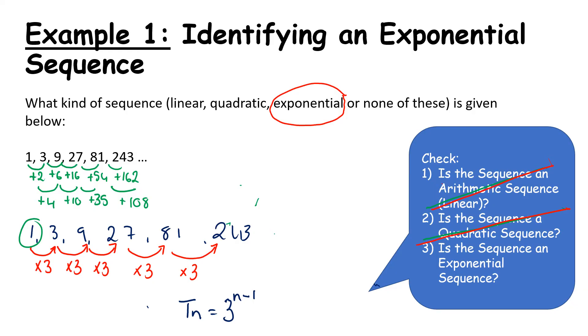And remembering back to our rules of indices, anything to the power of 0, and in this case, 3 to the power of 0 is 1. But the 3, this common ratio, is still our big number or our base.